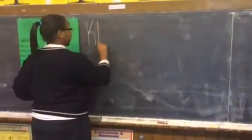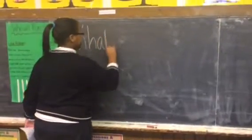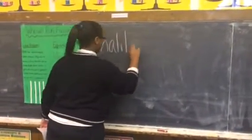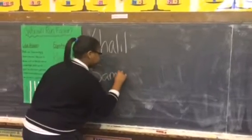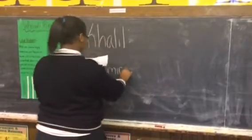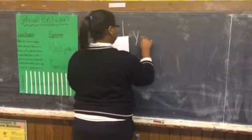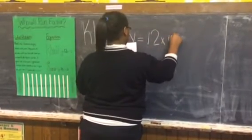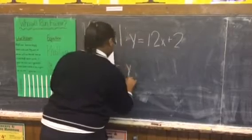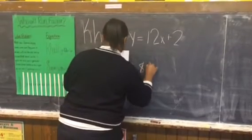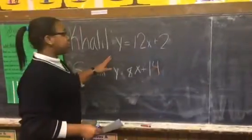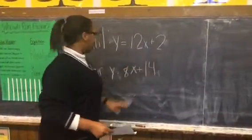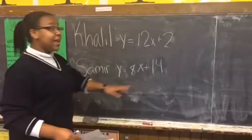First, I'm going to write their names so I don't get them wrong. Kahlil and Samir. Next, I'm going to write their equations. Kahlil's equation is y equals 12x plus 2. Samir's equation is y equals 8x plus 14.